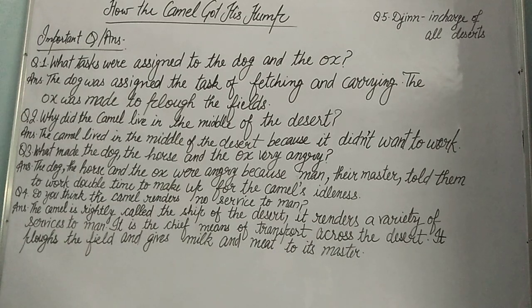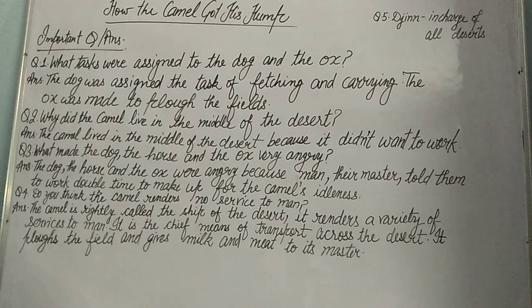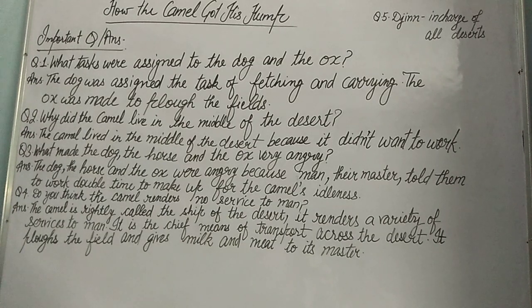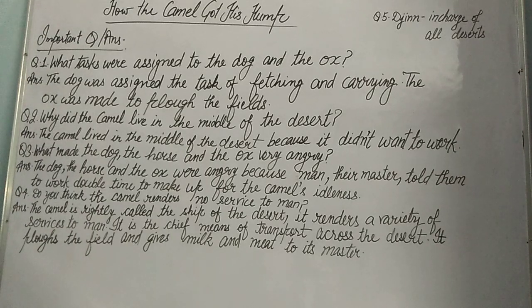It is the chief means of transport — ek jagah se dusri jagah tak cheezein le jane mein, across the desert. It plows the field also — marusthal mein field ki plowing ka kaam bhi camel karta hai, kyunki baaki janwaaron ke liye wahan survive karna mushkil hai. Camel apne hump mein bohut sara food store karta hai. Iske alawa, it can give milk also — ootni ka milk bahut useful hota hai. And it also provides meat to its master.